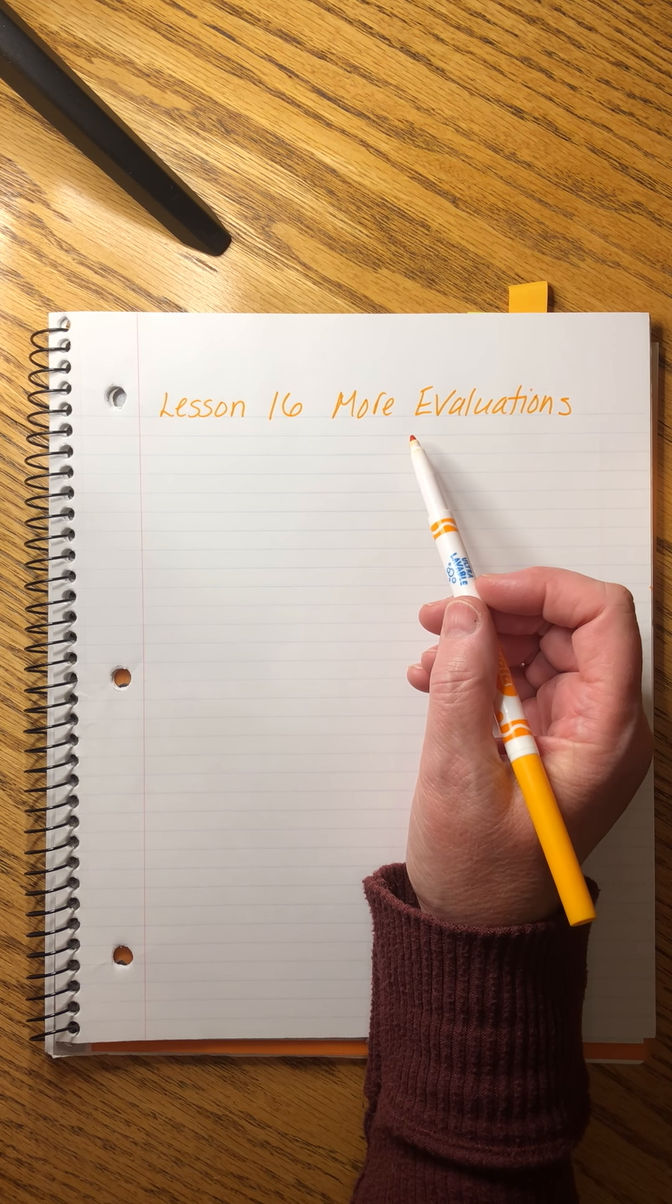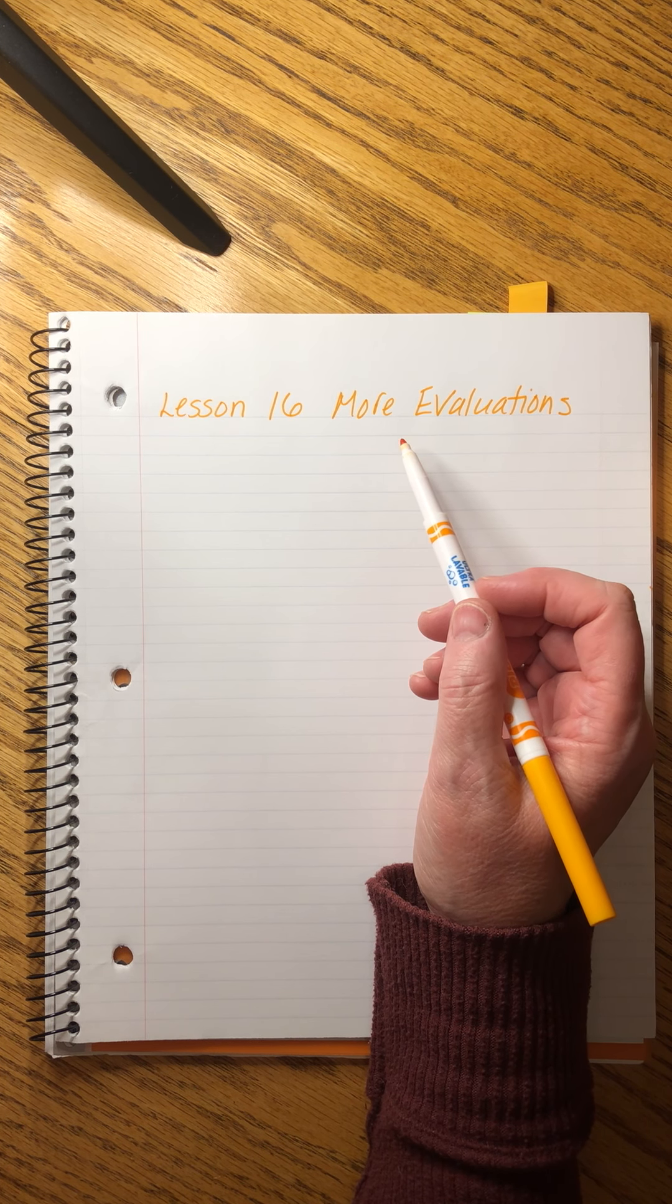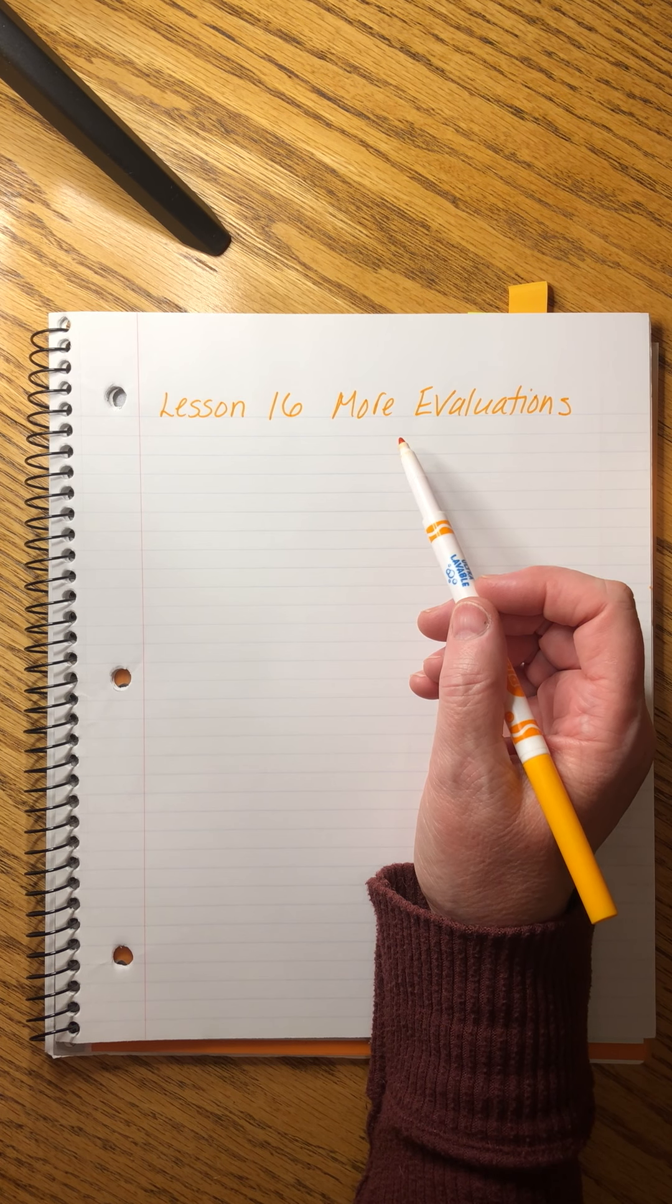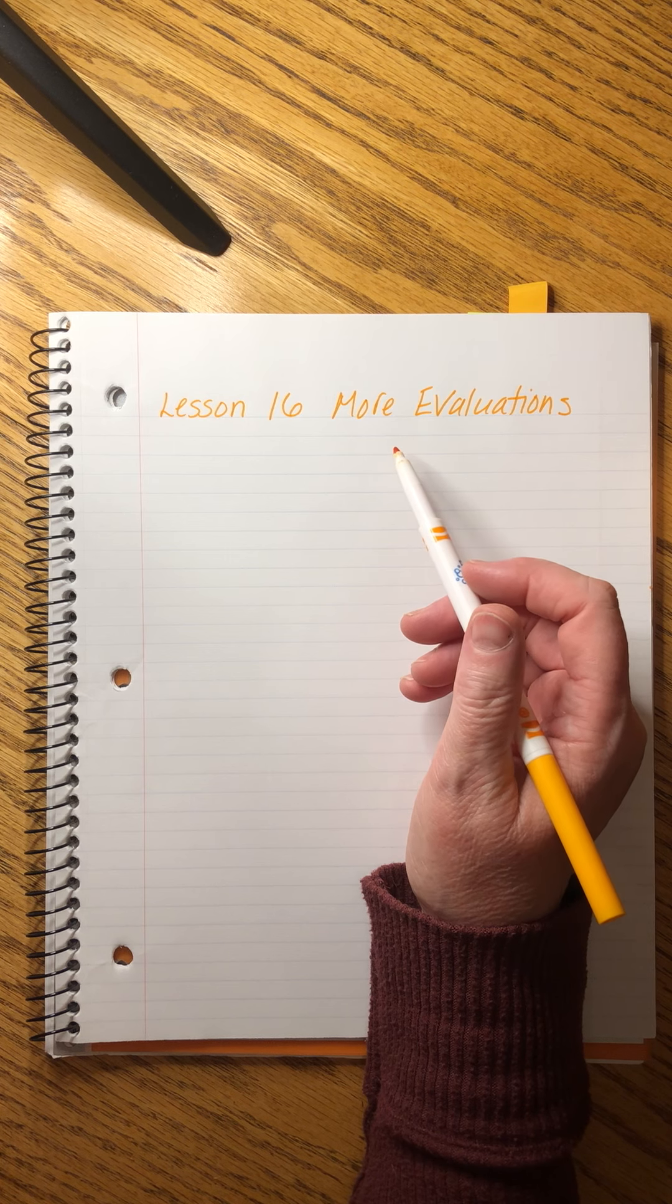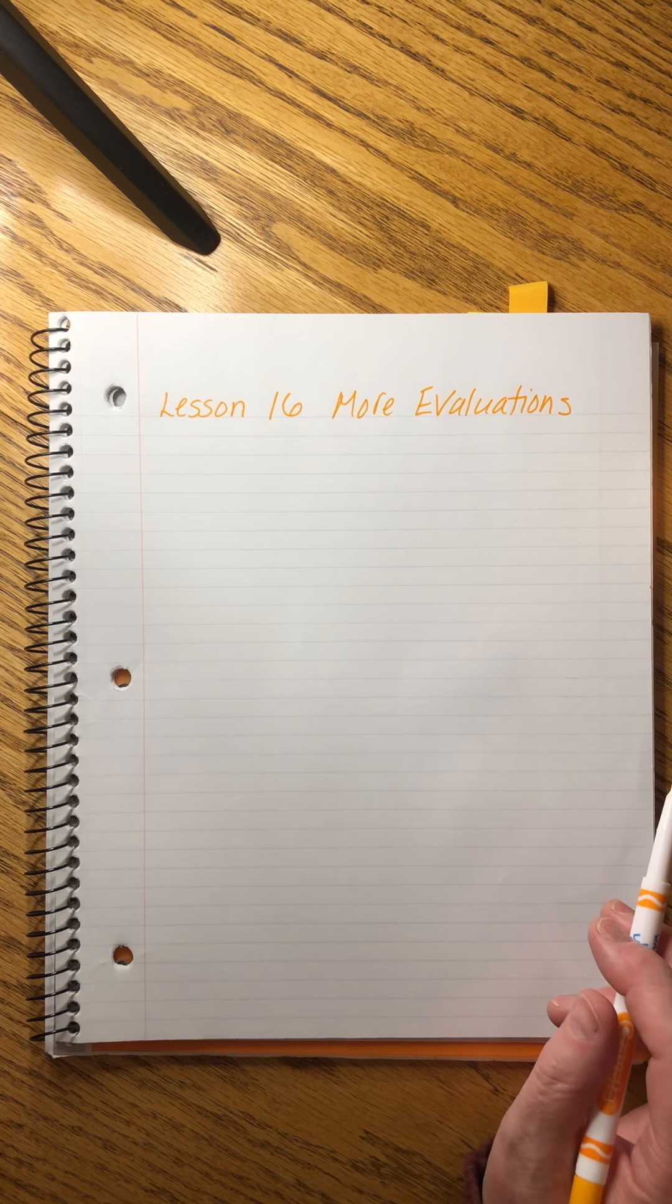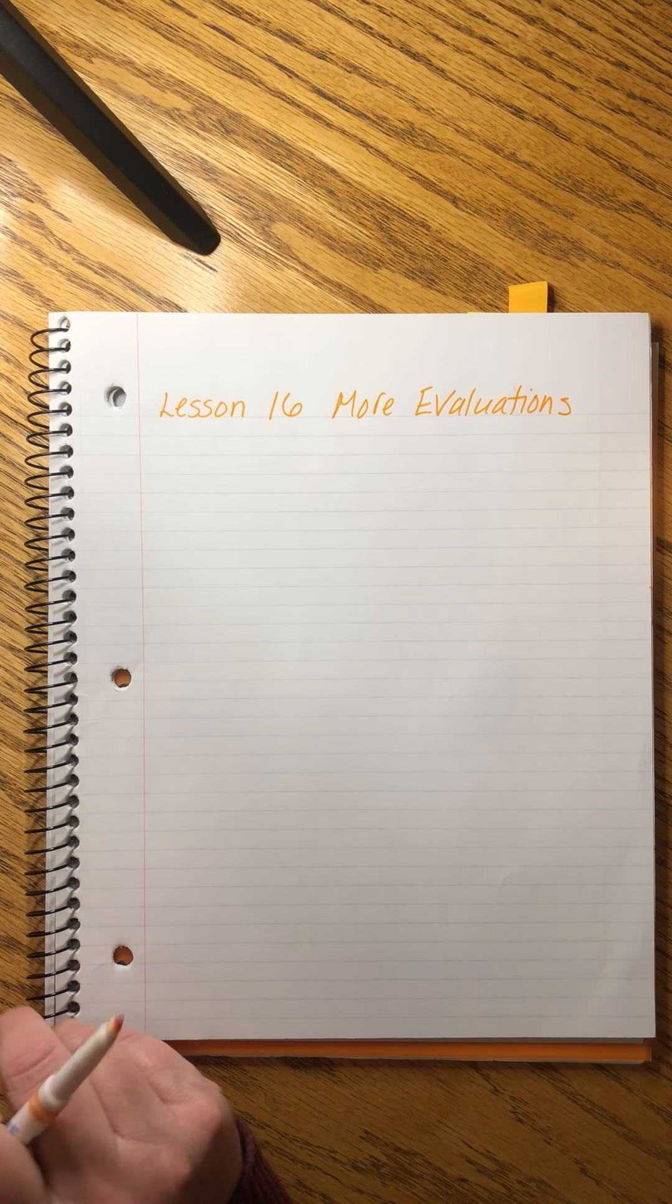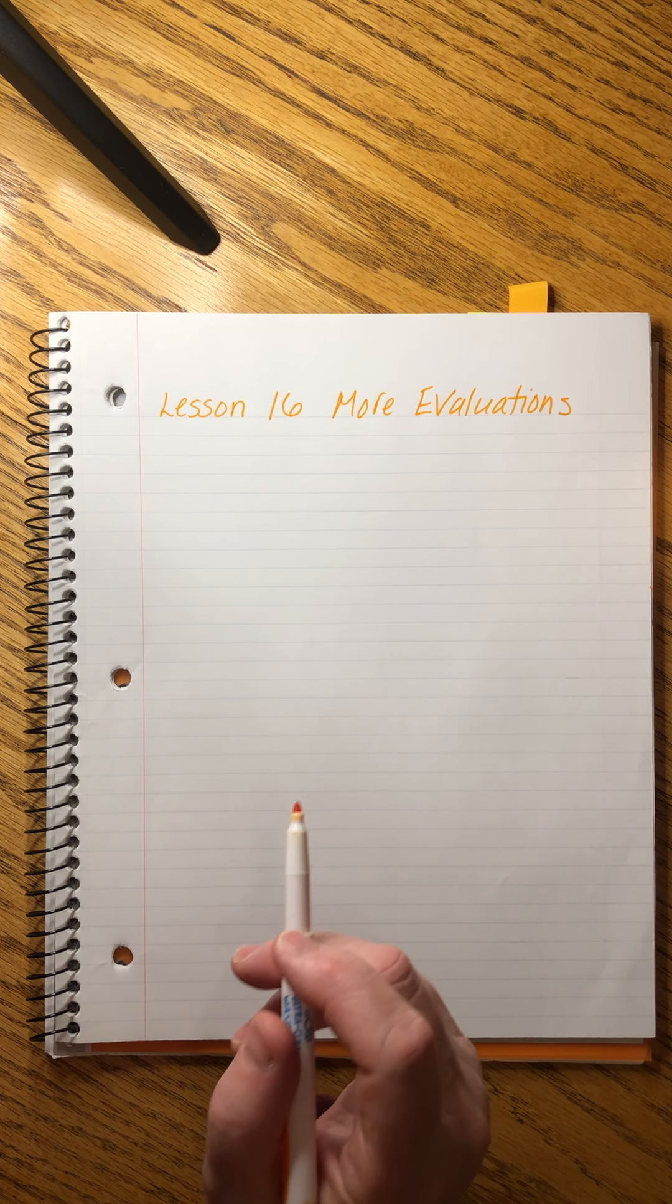Saxon Algebra 1 Lesson 16. One topic. We're going to do some more of those evaluation problems like we did, I don't know, when was it? A couple lessons back. I promise you that this will not be a monster one-topic lesson like that surface area one was where it took us 10 years to do three problems. This is going to be much better, shorter and sweeter, although it is a step up in complexity from what we were doing.